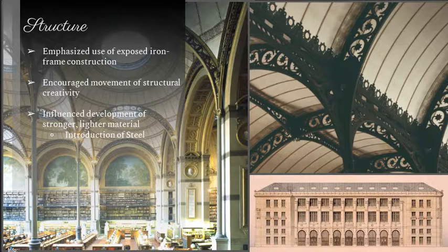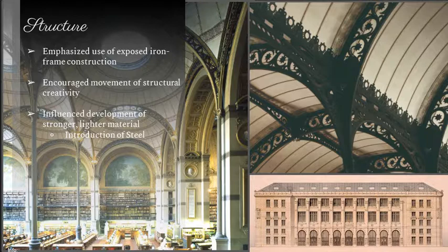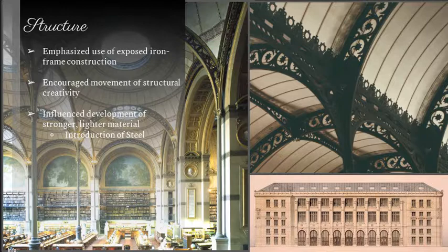To emphasize his structural contributions — he emphasized exposed iron frame construction and encouraged a new movement of structural creativity. As students in studio today, we talk about how structure doesn't have to be hidden and can be shown. The picture in the upper right is an amazing structural element he got creative with. He was a forerunner for future architects to do the same, and this influenced the development of stronger, lighter materials — eventually, iron frame construction evolved into steel.